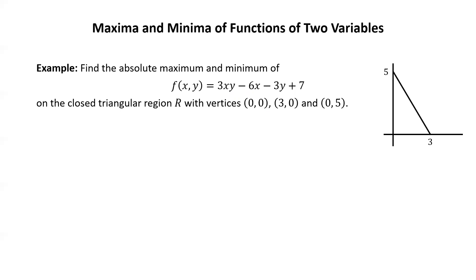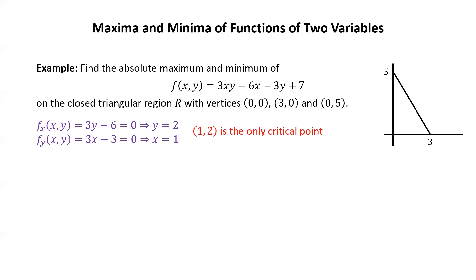We start by finding the critical points. Taking the partial of f with respect to x gives 3y minus 6; setting that equal to zero gives y = 2. Taking the partial of f with respect to y gives 3x minus 3; setting that equal to zero gives x = 1. So there is only one critical point: (1,2). We check that this point lies in the region — looking at the picture, (1,2) is indeed inside the region. Next, we check the boundary, because absolute maxima and minima occur at critical points or on the boundary. The boundary of this triangle has three pieces: C1, C2, and C3.